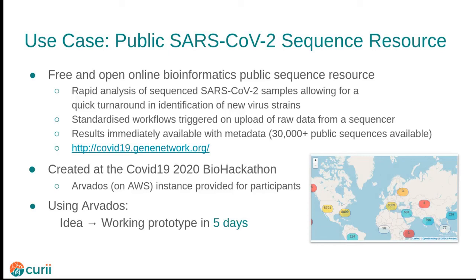In April 2020, a week-long online biohackathon was organized to see how bioinformatics could help in the fight against SARS-CoV-2. One of the projects to emerge from this was the Public Sequence Resource, PubSeq, located at covid19.genenetwork.org. The vision of this resource was to provide viral sequence data where scientists could easily run their own custom batch analysis. Using Arvados, we were able to go from concept to working prototype in five days. Today, this resource has over 30,000 viral sequences available, along with metadata and a number of workflows for processing the data.